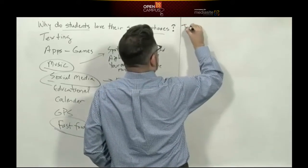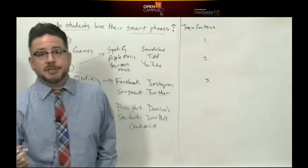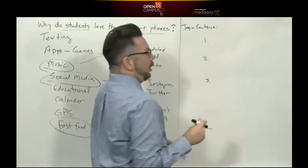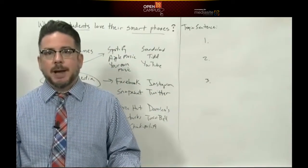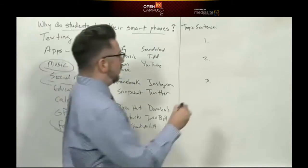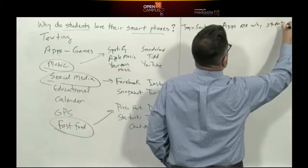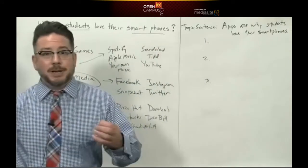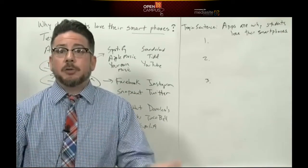What do we need for the sketch outline? Well, first we need a topic sentence. We need our three supporting points, and we need to add transitions for each of those before we start writing our rough draft. What is our topic sentence going to be? Remember, a topic sentence needs two basic parts: the limited topic — what the paragraph is basically about — and an idea about that limited topic. What is our limited topic here? We're mostly talking about apps, so: 'Apps are why students love their smartphones.' I basically took the rest of it directly from the question, made it a statement. The limited topic is apps, and the idea is that they're the reason why students love their smartphones.